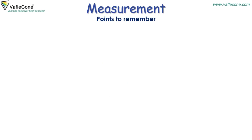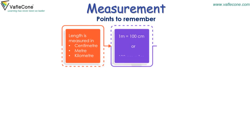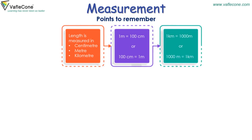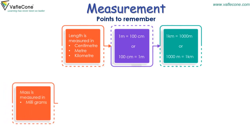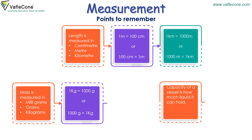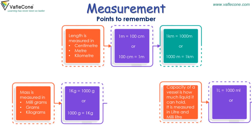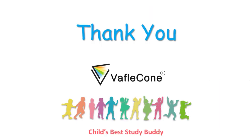Points to remember. Measurement of length: length is measured in centimeter, meter, and kilometer. 1 meter equals 100 centimeters; 1 kilometer equals 1000 meters. Measurement of mass: mass is measured in milligrams, grams, and kilograms. 1 kg equals 1000 grams. Measurement of capacity: capacity of a vessel is how much liquid it can hold; it is measured in liter and milliliter. 1 liter equals 1000 milliliters.